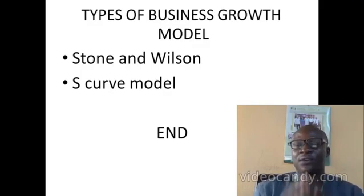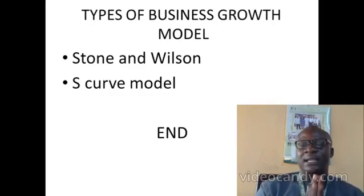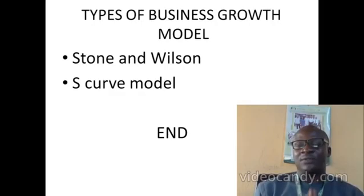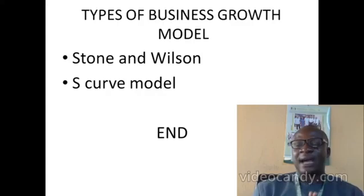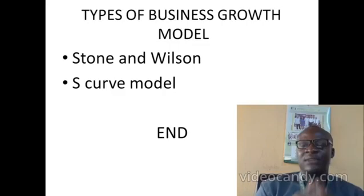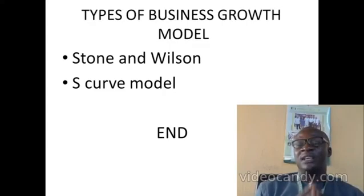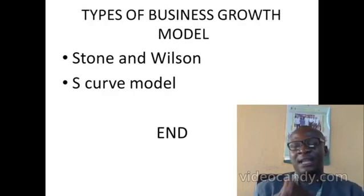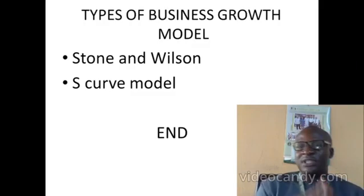Stage four is the stage of maturity. A business is said to have attained the maturity stage when it has reached a point where it is no longer at risk of easily folding up. Businesses that have built a strong base of branches, assets, employees, and a database are said to have attained maturity stage. Stage five is the stage of regrowth or decline. A business can attain maturity in stage four but may start to decline at stage five, or alternatively, having attained maturity, it may need to regrow — for example, expanding from three branches to ten branches.